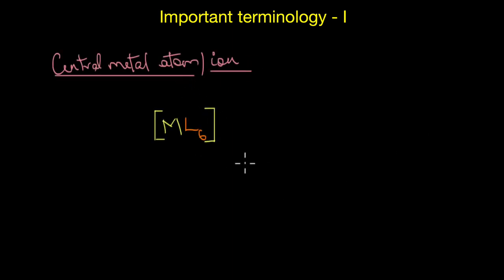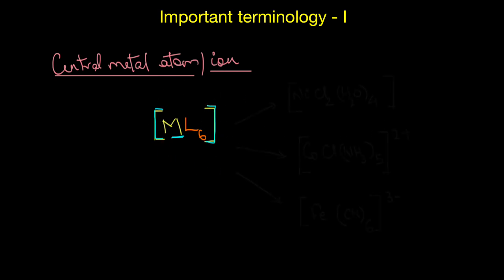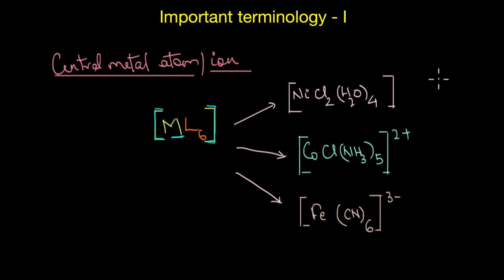Let's look at the next term: central metal atom or ion. The central metal atom or ion lies within the coordination entity, that is, the metal also lies inside the square brackets. The metal atom or ion is coordinated to a fixed number of groups via secondary bonding and is bound in a definite geometrical arrangement.